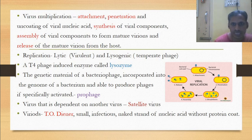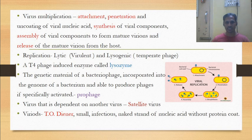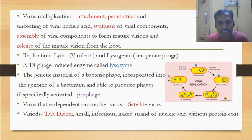A virus that depends on another virus is called a satellite virus. Viruses have several divisions: viroids, virions, virusoids, and prions. Viroids, discovered by Diener, are small infectious naked strands of nucleic acid without a protein coat. Prions are proteinaceous infectious particles that are very small and do not have nucleic acid.